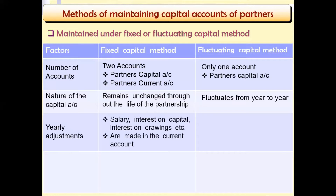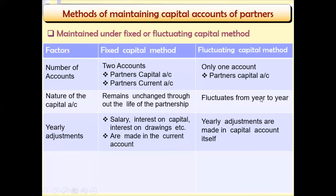Regarding yearly adjustments: in the fixed capital method, adjustments such as salary payments, interest on capital, and interest on drawings are all made in the current account. In the fluctuating capital method, these adjustments are made in the capital account itself — that is why the balance of the capital account keeps fluctuating from year to year.